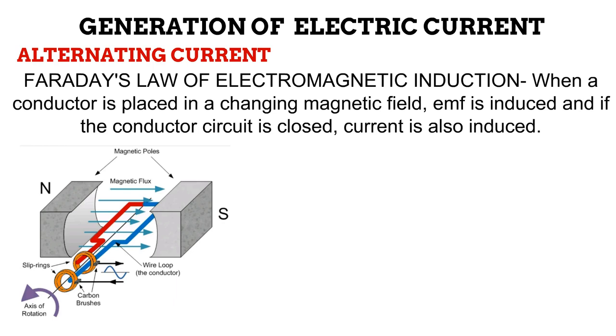I hope you can observe all these on the diagram. The carbon brushes are connected to the circuit where we want generated electricity to flow into. Now that we have gone over the schematics, let us go through the steps involved in alternating current generation.